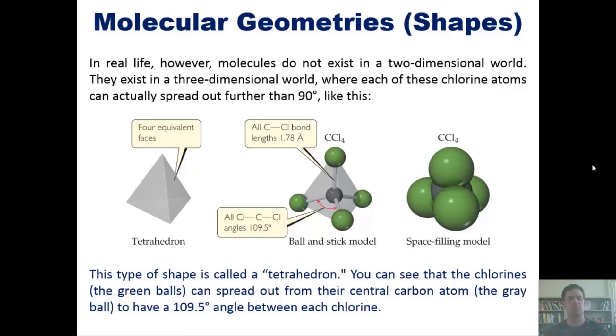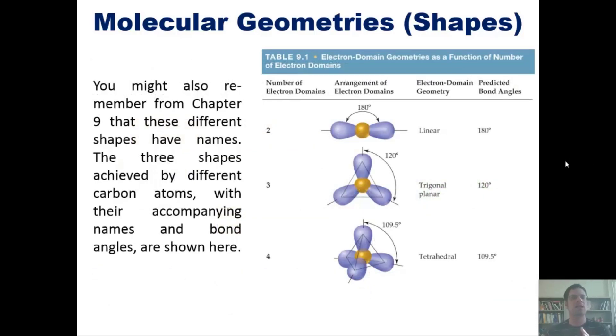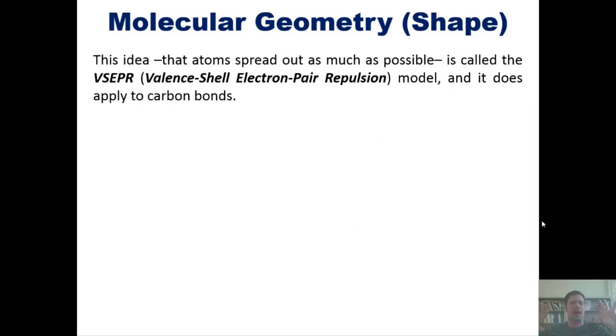You might also remember from chapter 9 that different shapes have names. The three shapes achieved by different carbon atoms are: linear (180 degree angle), trigonal planar (120 degree angles), and tetrahedral (109.5 degree bond angles). This idea that atoms spread out as much as possible is called the VSEPR (Valence-Shell Electron-Pair Repulsion) model, and it does apply to carbon bonds.